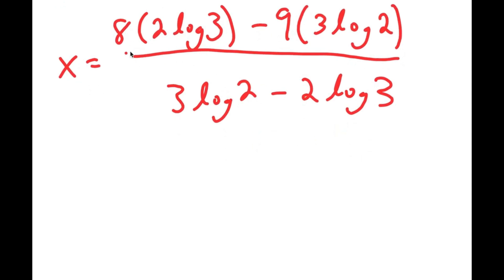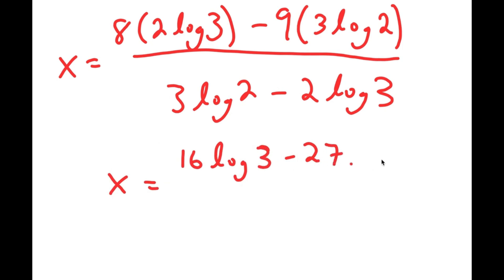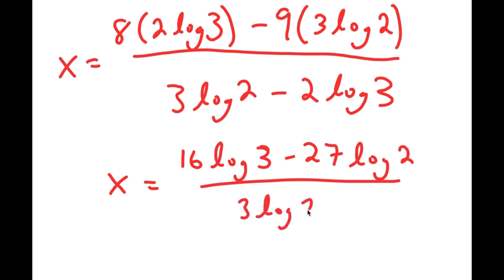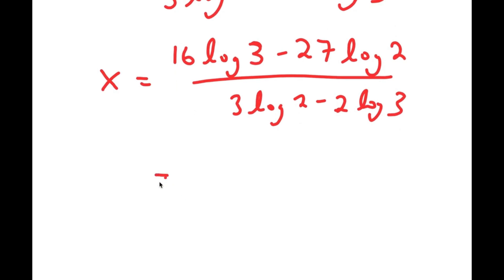So 8 times 2 is 16, giving x equals 16 times log 3 minus 27 times log 2, over 3 log 2 minus 2 log 3, and all of this is equal to approximately 9.6548.